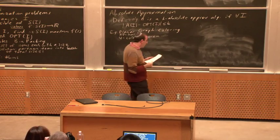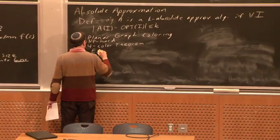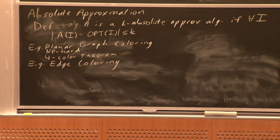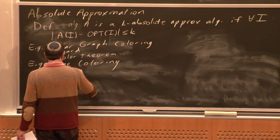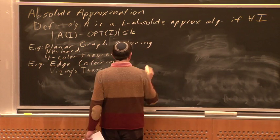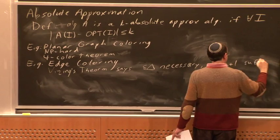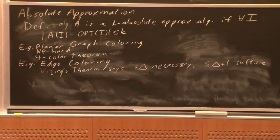There's a similar result for edge coloring. Edge coloring is a variation where instead of coloring the vertices, you want to color the edges of the graph, and no two edges that share a vertex are allowed to have the same color. There's a famous theorem of Vizing which says that obviously you need at least delta colors, but at most delta plus 1 colors suffice. So you can get a one absolute approximation from Vizing's theorem.